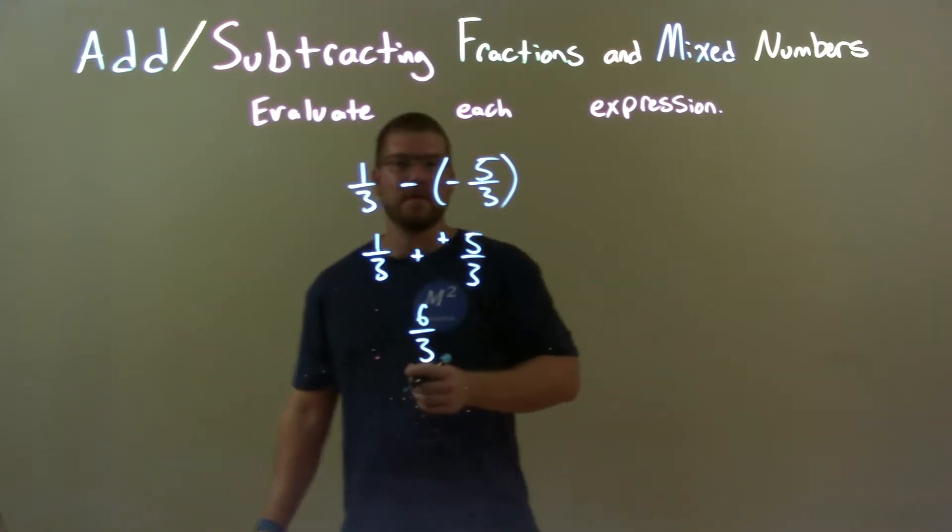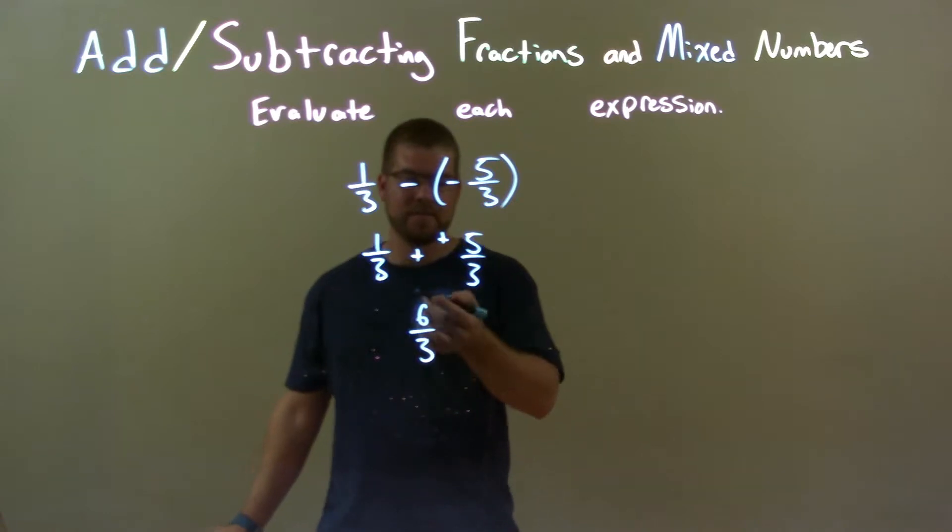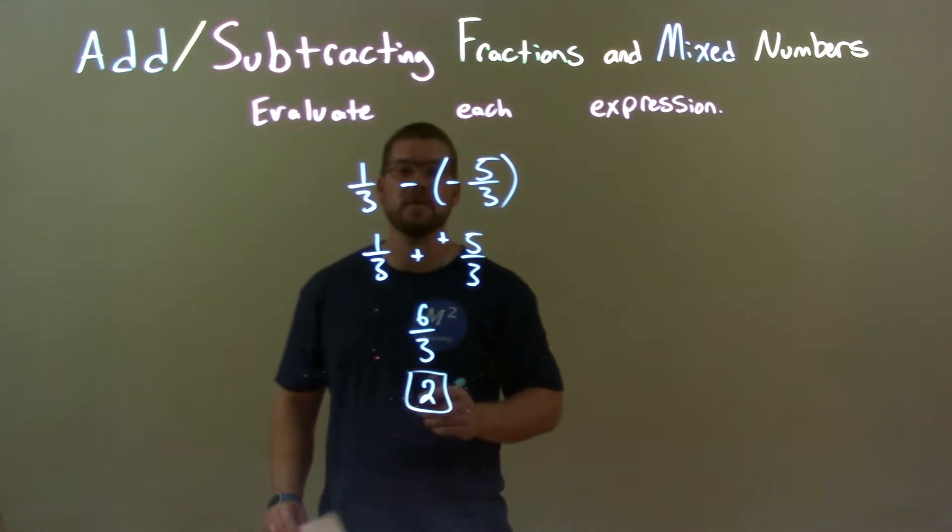Well, six-thirds can be simplified. Six divided by three is just two, so six-thirds simplifies to be two. So our final answer here is just two.